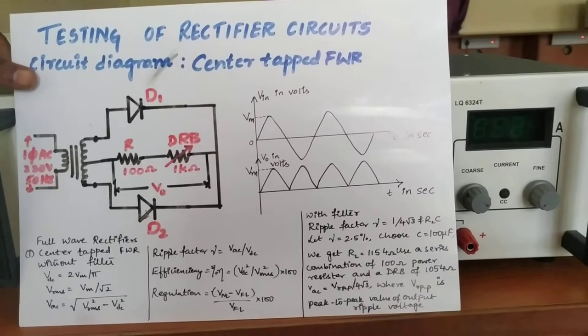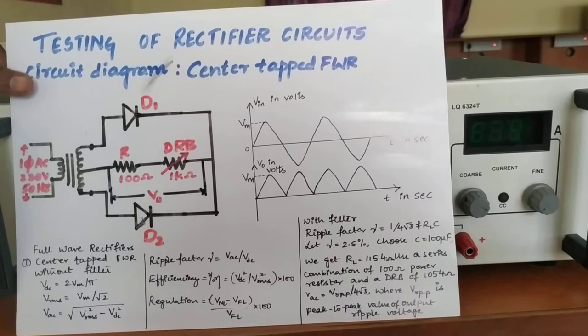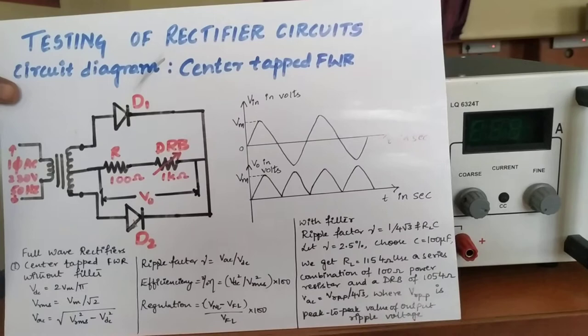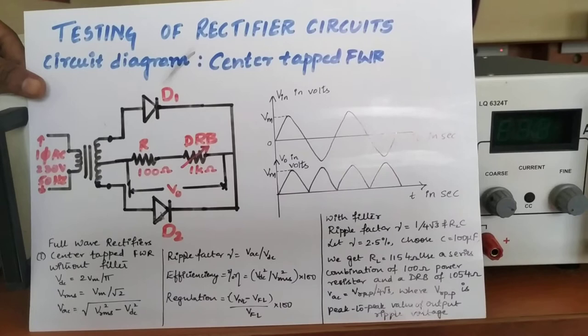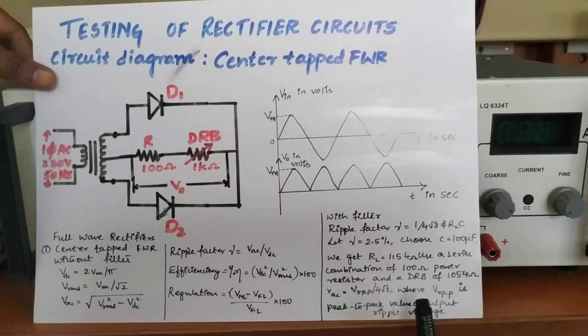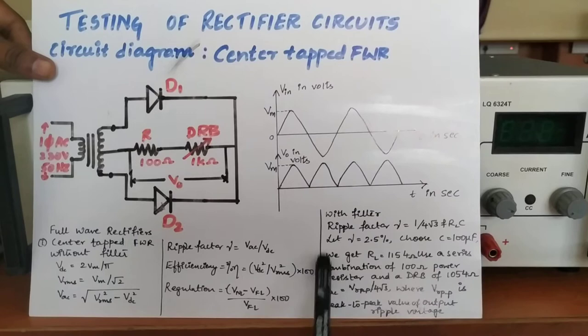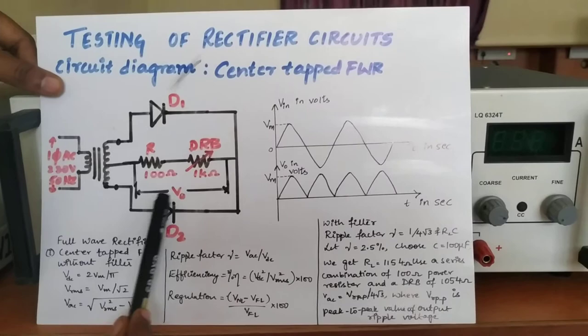To achieve this high resistance value, instead of using a single resistor, we use a combination of two resistors in series. We select a 100 ohm power resistor and a DRB — that is, a Decade Resistance Box — which contains a range of resistances and is usually up to 1 kilo ohm. In this lab, we select 1054 ohms (approximately 1 kilo ohm) on the DRB, giving a total load of about 1154 ohms.